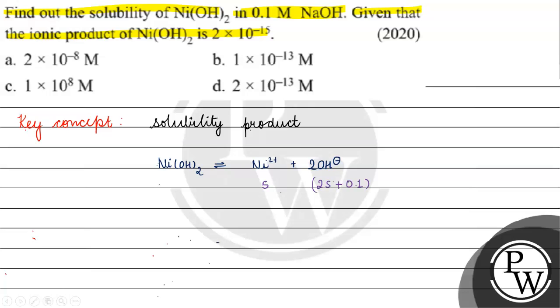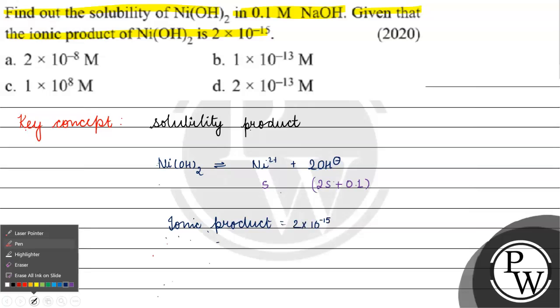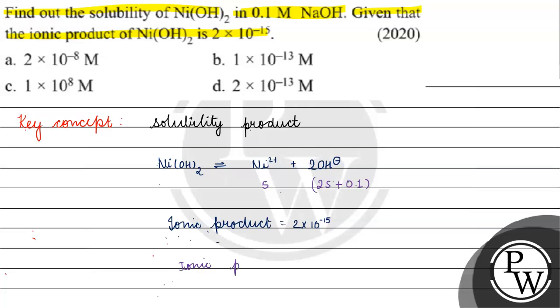The ionic product is 2 × 10⁻¹⁵. The ionic product equals concentration of Ni²⁺ times concentration of OH⁻ squared. This will be S × (2S + 0.1)².